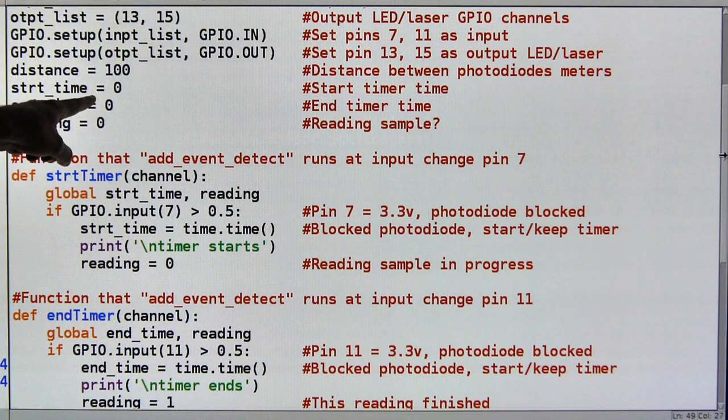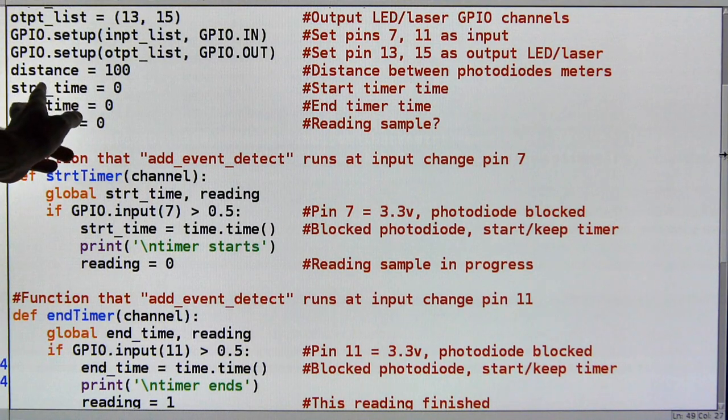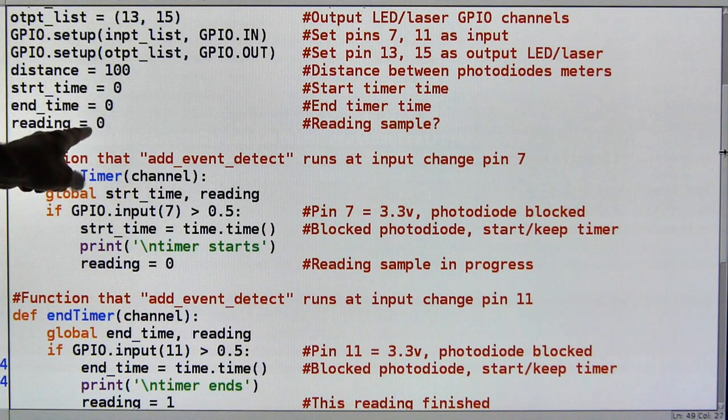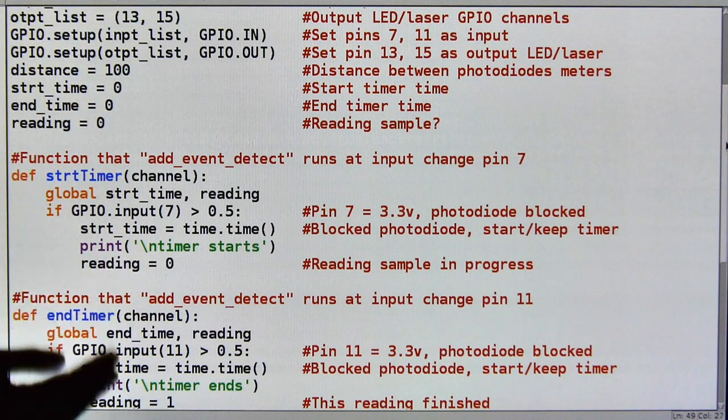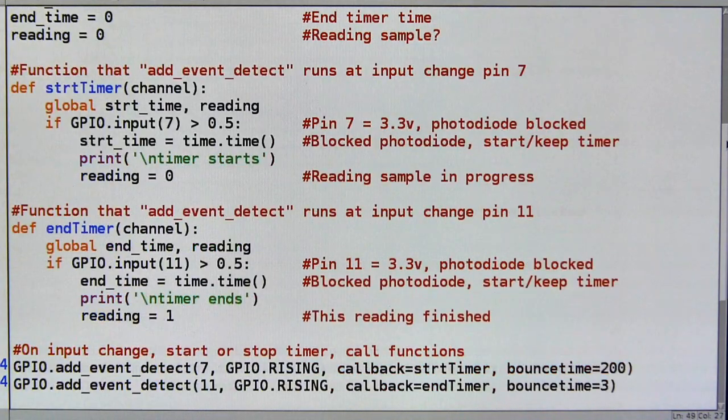I need to keep my start time. And my end time. And of course the difference between those is the total time it took to run the race. And then I've got a variable to tell me whether I'm reading the sample. Whether the sample has begun reading or ended. Which is important.